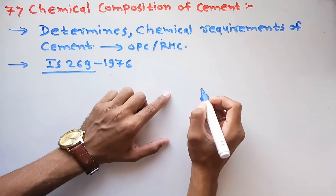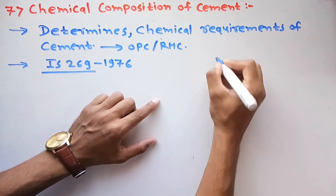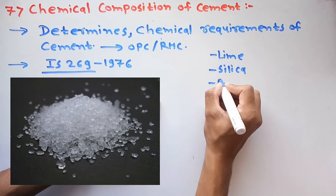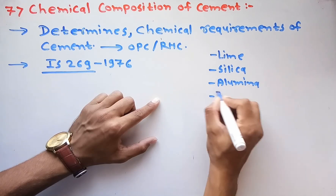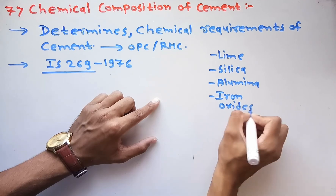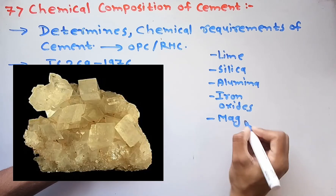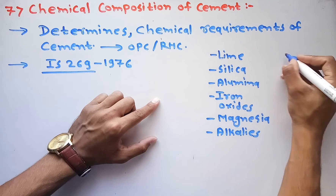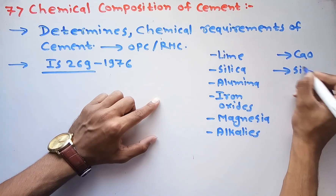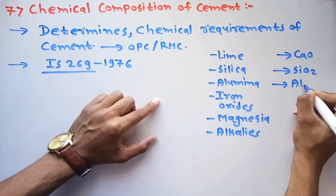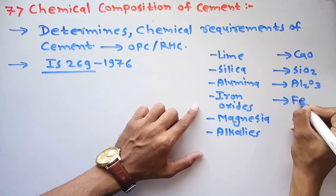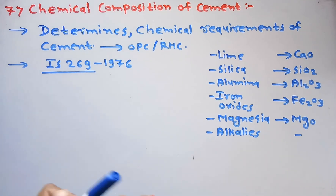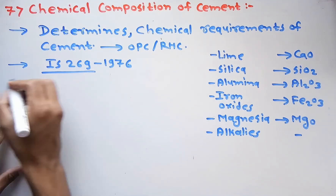We will quickly see what the chemical compositions of cement are. The chemical compositions are: lime (CaO), silica (SiO₂), alumina (Al₂O₃), iron oxides (Fe₂O₃), and magnesia (MgO).